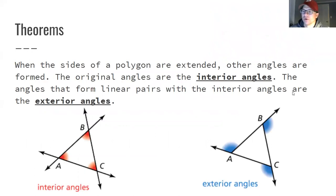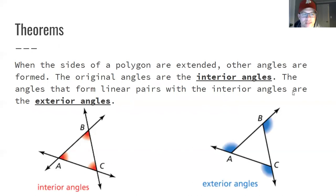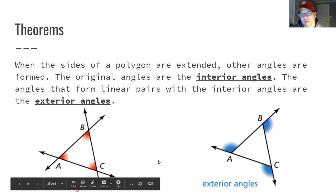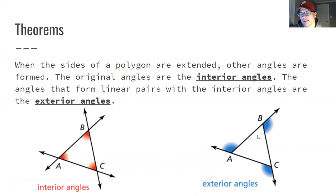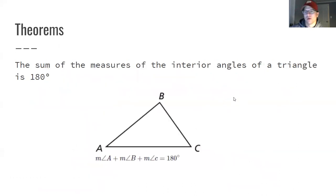Now let's look at a couple of theorems about interior and exterior angles. The sides of a polygon, when extended past the vertices, form exterior angles. The interior angles are linear pairs with the exterior angles, so they add up to 180 degrees. Also, the sum of all interior angles of every triangle is always 180 degrees — angle A plus angle B plus angle C always equals 180.